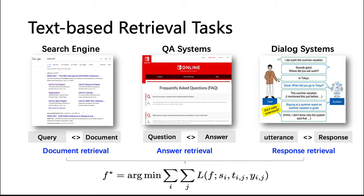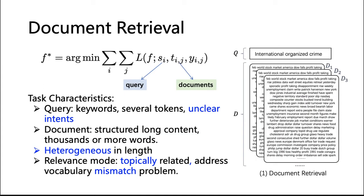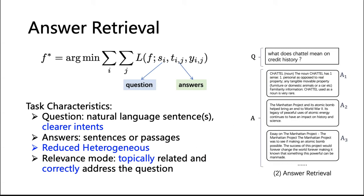However, the inherent definitions are quite different due to the heterogeneity of each task. For document retrieval, the queries are often short keywords with unclear intents, while the documents are well-structured long documents containing thousands or more words. They are thus heterogeneous pairs in terms of length, which leads to the typical vocabulary mismatch problem. For answer retrieval, the questions are natural language sentences with clearer intents, and the answers are well-formulated sentences or passages. Compared to document retrieval, answer retrieval is more homogeneous, with more concentrated topics.